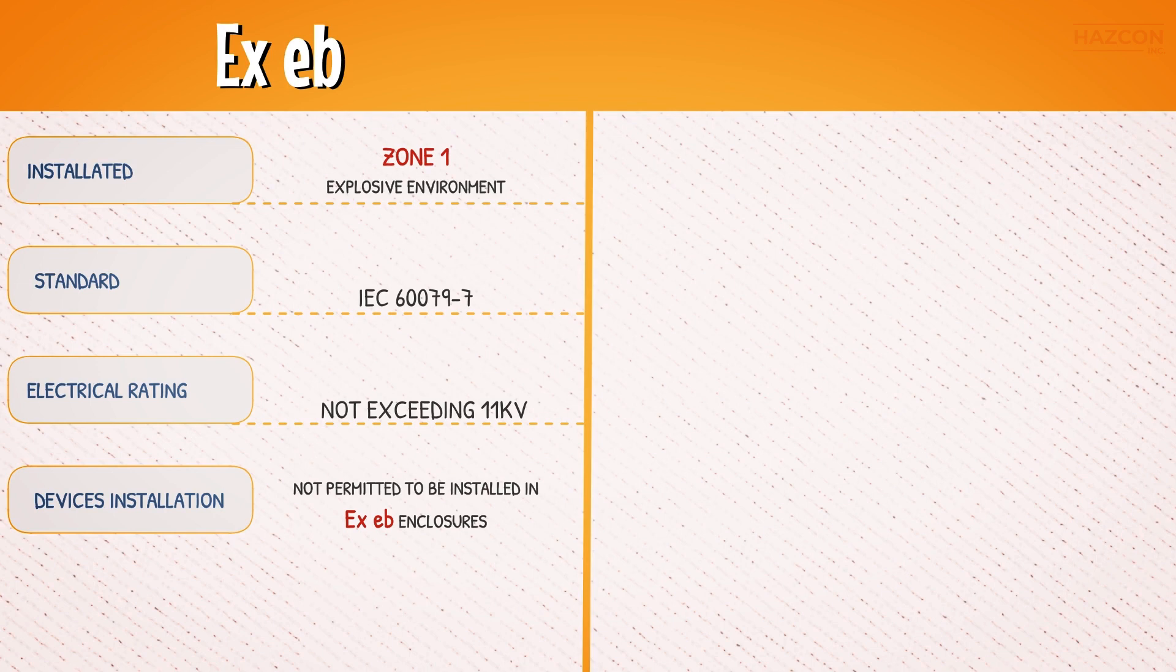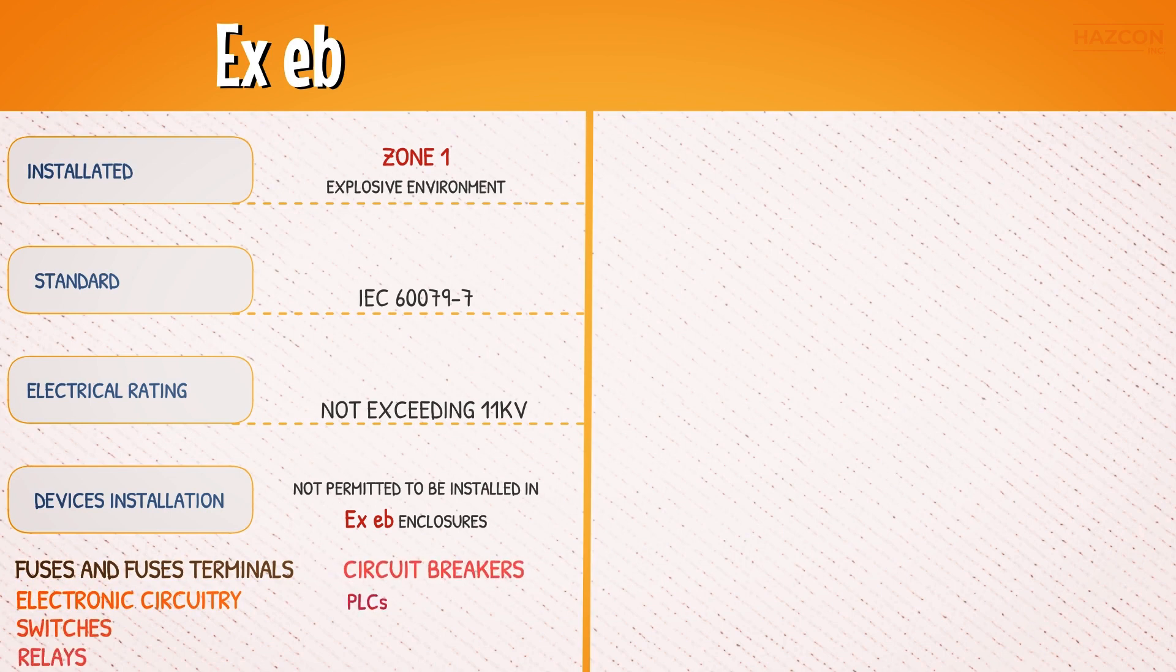Electrical devices that must definitely not be installed inside an Ex eb enclosure for use in Zone 1 include fuses and fuse terminals, electronic circuitry, switches, relays, circuit breakers, PLCs, and uncertified terminal blocks.